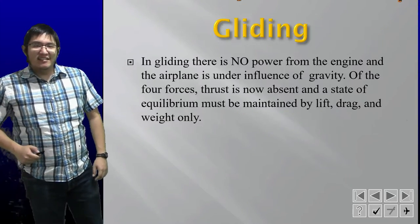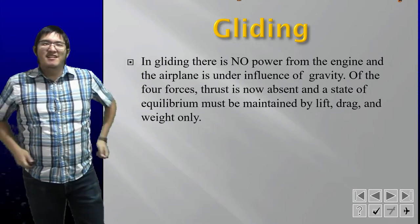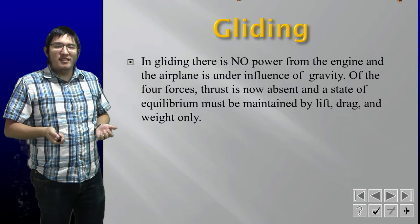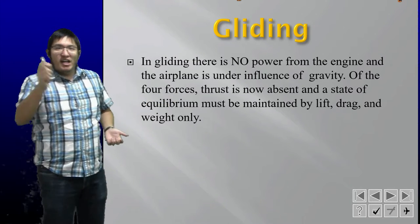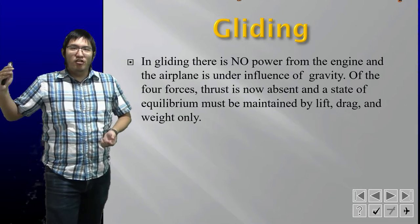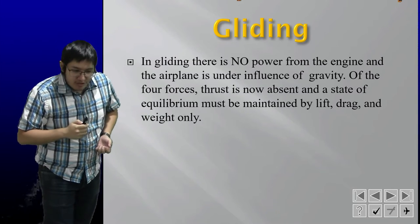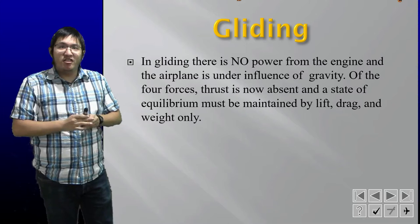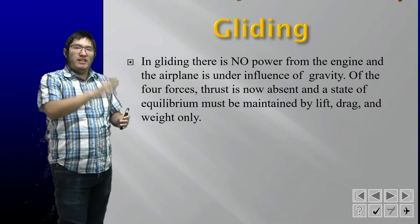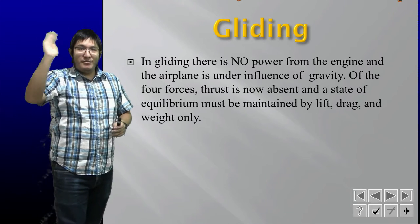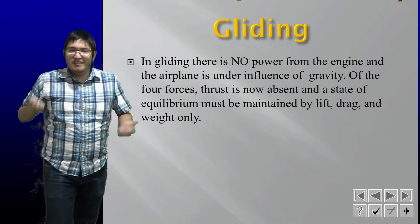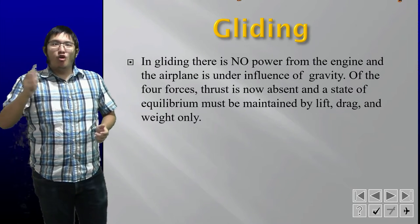Gliding — in a glide there's no power, because the airplane is under the influence of gravity and we no longer have thrust. Gliders fly with a slightly nose-down attitude, which means lift is slightly skewed forward. This divides lift into two components: a vertical component that keeps you up, and a horizontal component that moves you forward. That horizontal component is our thrust in a glider.